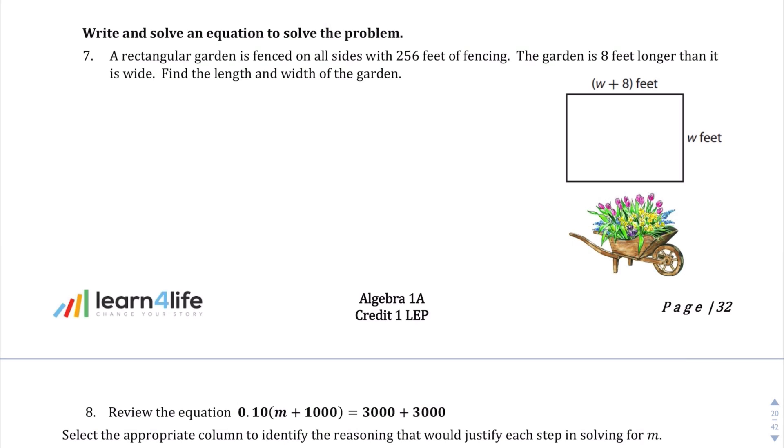Then question number 7. A rectangular garden is fenced on all sides with 256 feet of fencing. The garden is 8 feet longer than it is wide. Find length and width of the garden. So we need to find the length and the width. So we need to find two things for this question. Because it's a rectangle, if that's W plus 8, we know that this is also W plus 8. And if this side is W, then this side is also W. So perimeter means if we add all those lengths together, we should get the perimeter of 256 feet. So let's go by one by one. That first side W, plus that top side W plus 8, plus that right side W, plus that bottom side W plus 8, should all equal 256 feet of fencing.